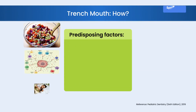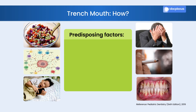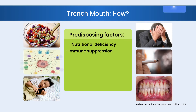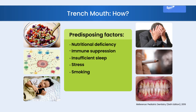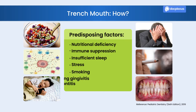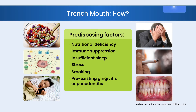Many predisposing factors contribute to the manifestation of ANUG. These mainly include nutrition deficiency, suppressed or compromised immunity, sleep deficit, stress contributing to cortisol imbalance, smoke that alters the microbial niche, vascularity, immune cell responses, and pre-existing gingivitis or periodontitis that could turn into necrotizing ulcerations in the presence of any of the above mentioned factors.